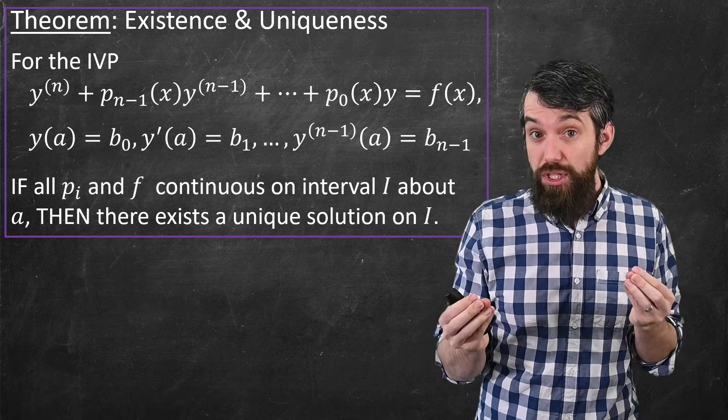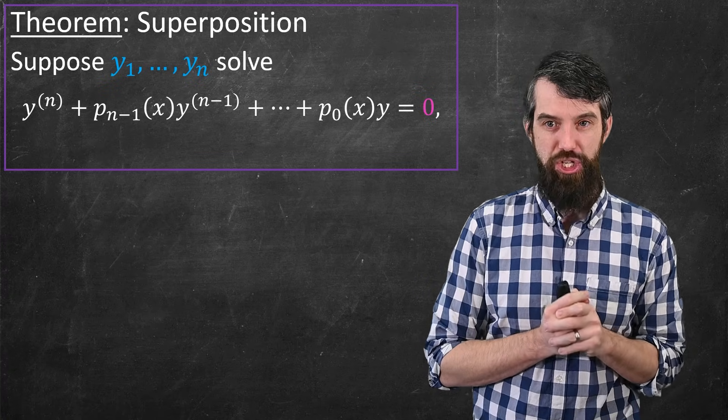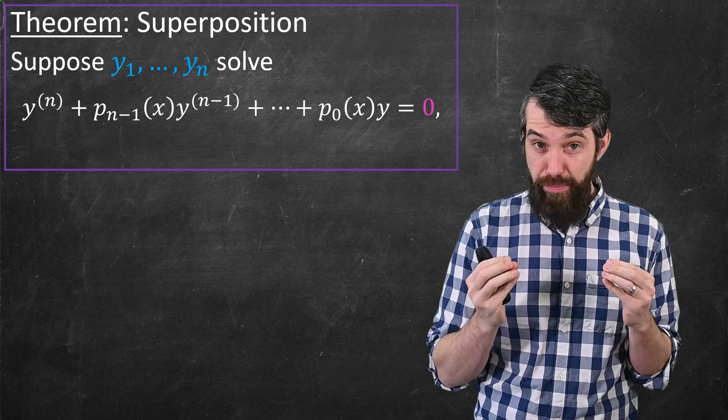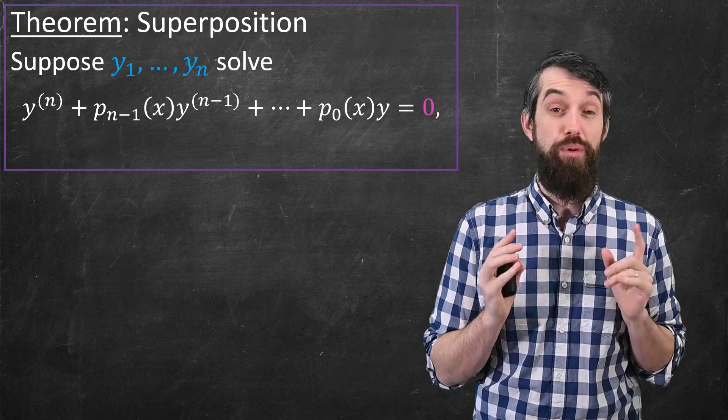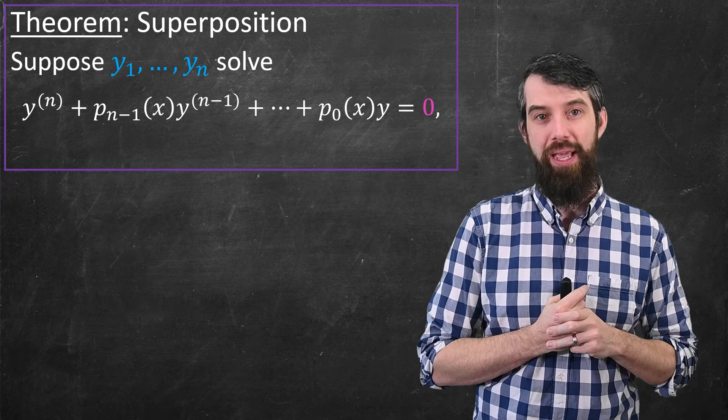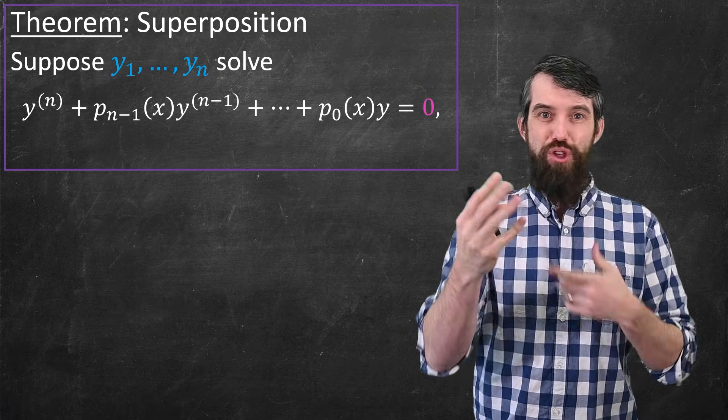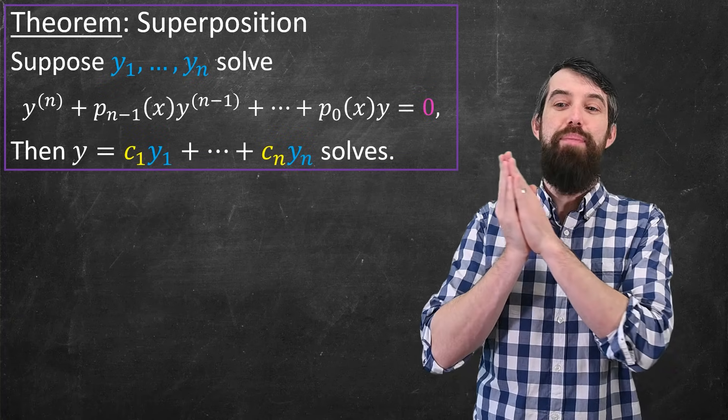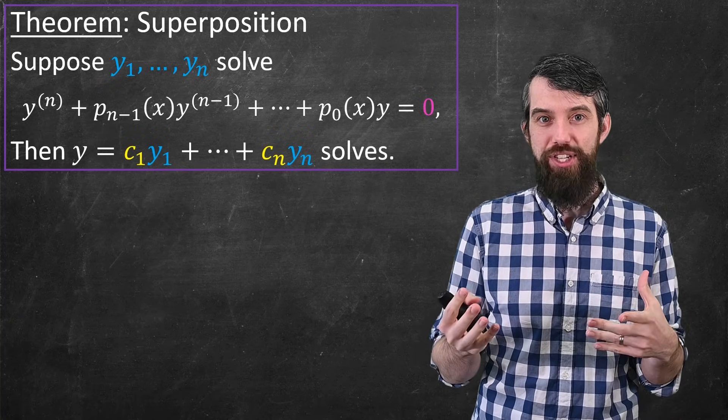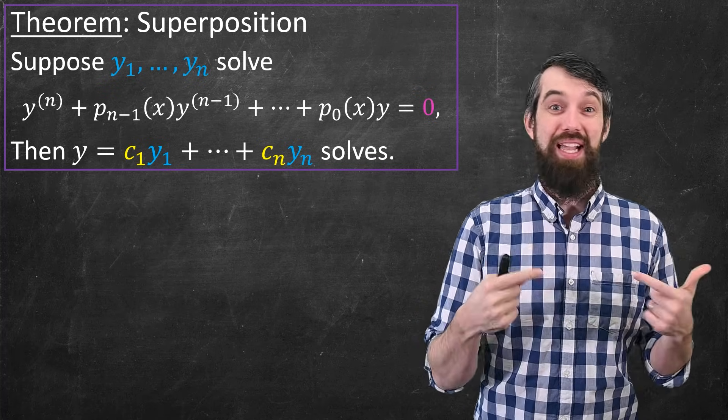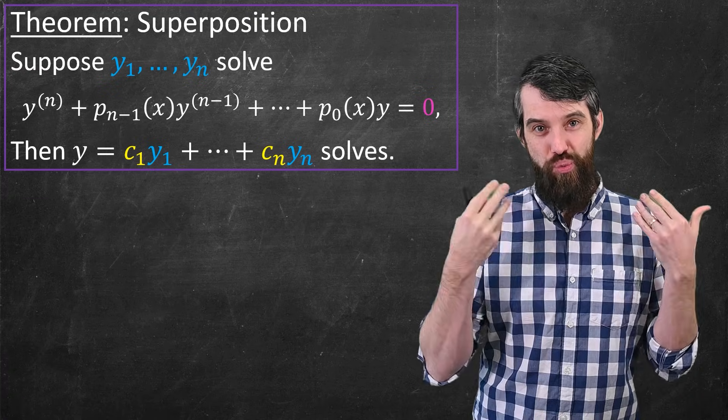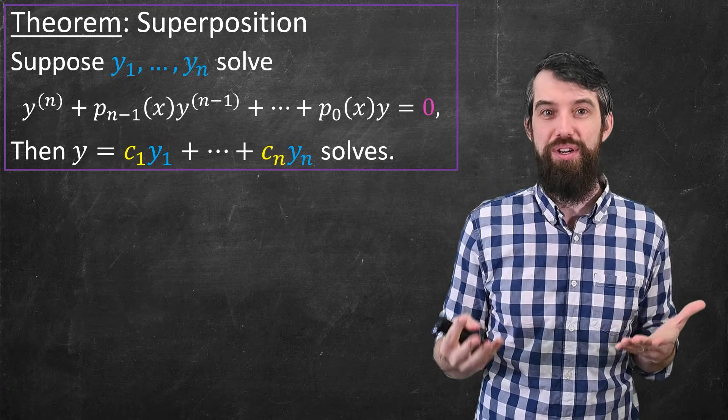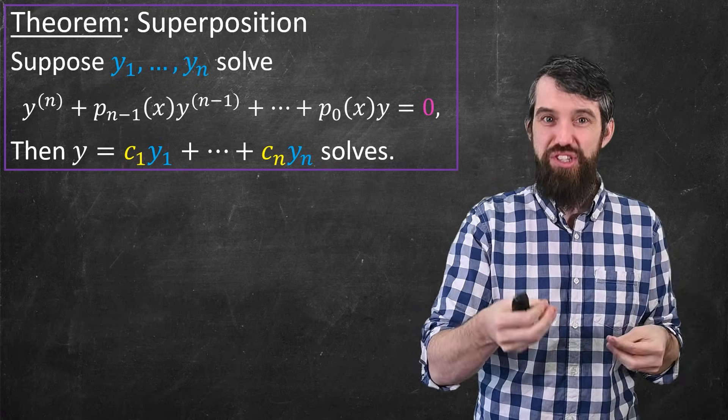The next point is one that we've also seen back when we were talking about second order. It's the principle of superposition. And this is the idea. Imagine you have n solutions to an nth order, and this is important, homogeneous differential equation. Homogeneous meaning the right-hand side was equal to zero, as I've highlighted in pink. Then the idea is this. If you found n solutions, you could take any linear combination of those, c1 y1 up to cn yn, any linear combination that you wish, and that also solves the differential equation. The basic idea is that since my equation is linear, and derivatives are linear operators, then this all just plays really well with taking a linear combination. Everything works together. So you find any solutions, linear combinations of them are also solutions.